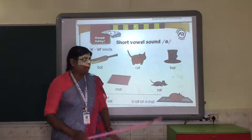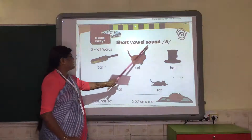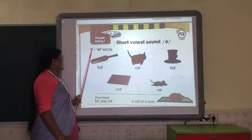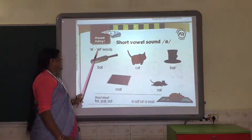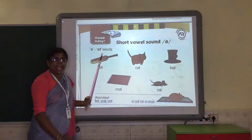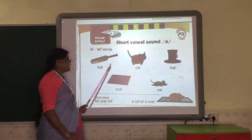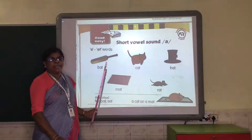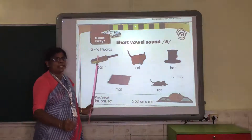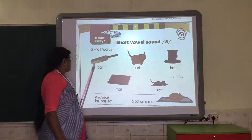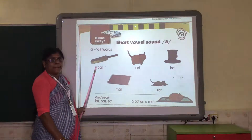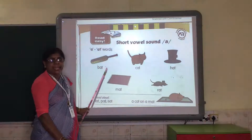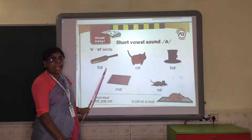Now, short bubble sound A. A is a bubble. A-T — the AT family is a small family. Now if we make a word, we need one part. B is taken and when we add A-T.